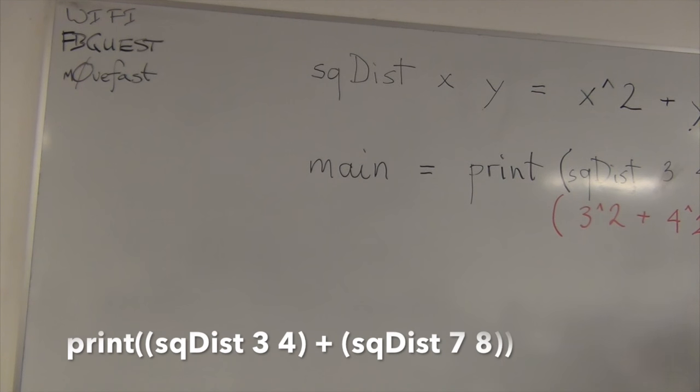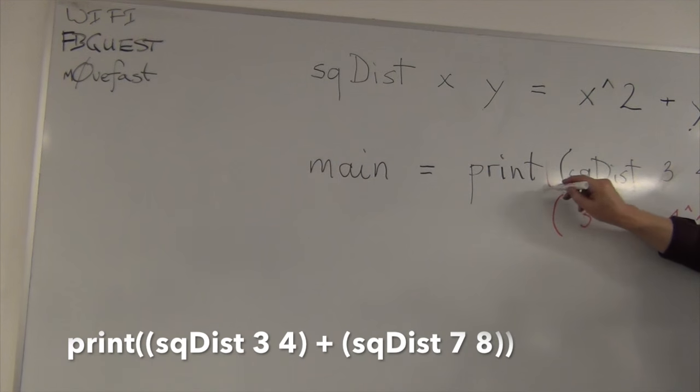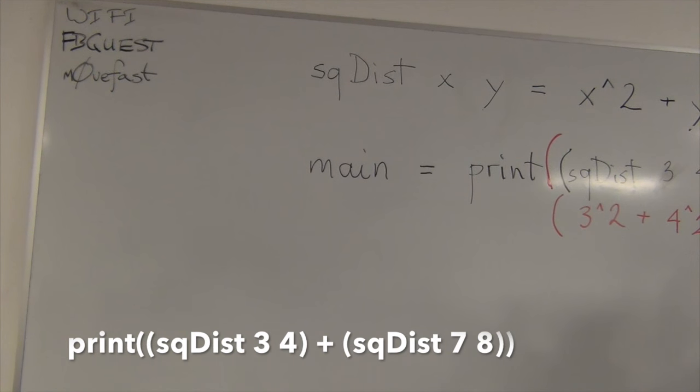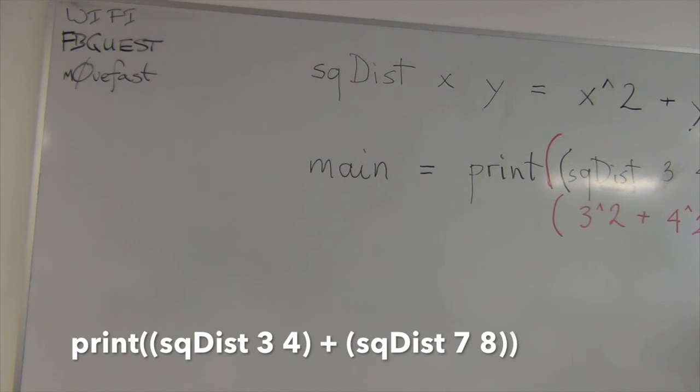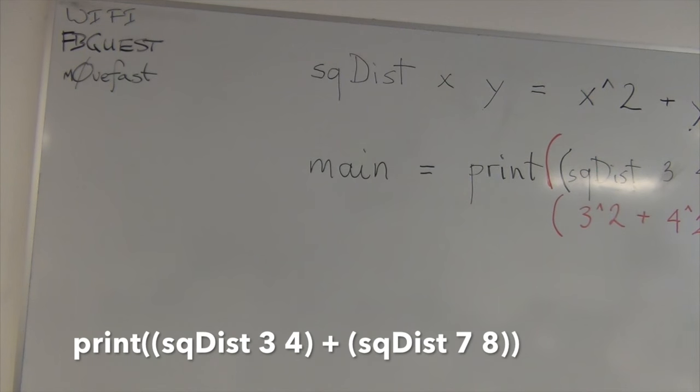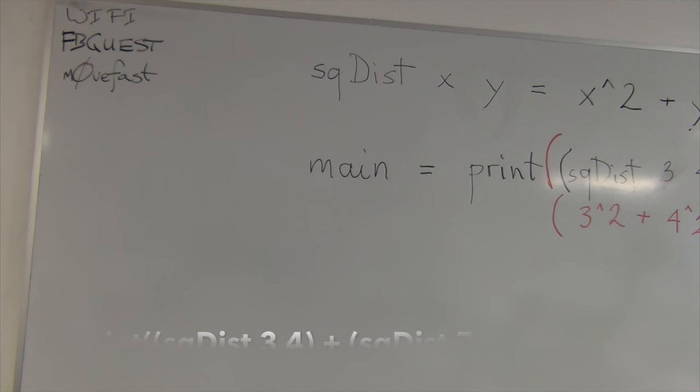So, if, actually if I had, you know, like, print sq dist plus sq dist 7, 8, you know. Then I could substitute this here and I could substitute, you know, 7 square plus 8 square here. That would be fine. Right? Because it sort of works like a macro. You know, but what, but what the problem is with macros?